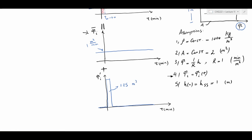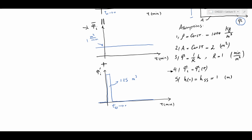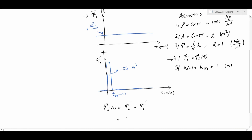This is an impulse function — its duration is very short, but for simplicity it's shown as a tall narrow rectangle. Now that we've split qi into qi-bar and qi-prime, we write: qi(t) = qi-bar + qi-prime = 1 + 1.25·δ(t), where δ(t) is the unit impulse or Dirac delta function. With this, we have all the input parameters and assumptions needed to solve the example.